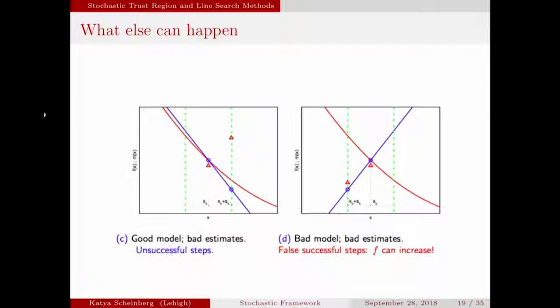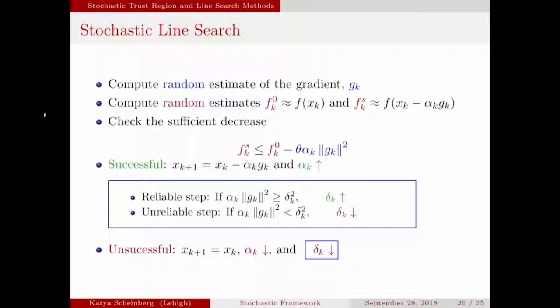If you cannot control the increase of the objective function, you're in trouble. With line search it's actually really difficult to do, so the stochastic line search had to be changed a little bit precisely because of these difficulties. It has an additional control — it's still a line search, the method works pretty much the same — the only difference is that to have any kind of convergence guarantees, we have to make sure our estimates get more and more accurate if we think we're close to optimality. We think we're close to optimality when our steps are short or the gradients are small. Everything is adaptive in these algorithms — everything depends on the current state of affairs, you don't need any full gradients.